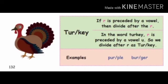The third pattern is the turkey pattern. Turkey pattern is when R is preceded by a vowel. When a vowel is followed by R, we have to divide the word after the letter R. In the word turkey, R is preceded by the vowel U, so we divide after R: tur-key.